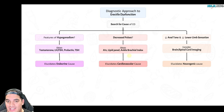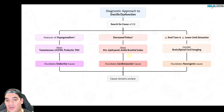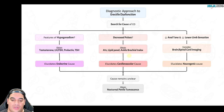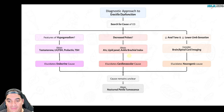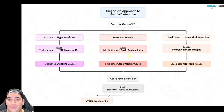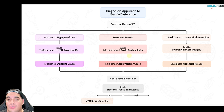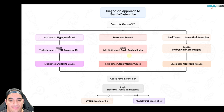If no identifiable cause is found, you can perform nocturnal penile tumescence testing — you check whether the patient develops an erection overnight. If no erection is present, this suggests an organic cause — something real is going on and you need to investigate further, possibly discontinuing SSRIs or antipsychotics. If a nocturnal erection is present, this suggests a psychogenic cause, such as sexual anxiety, as the potential trigger.